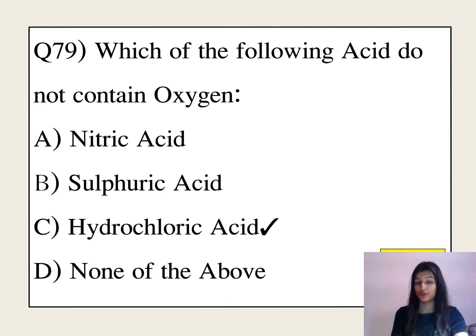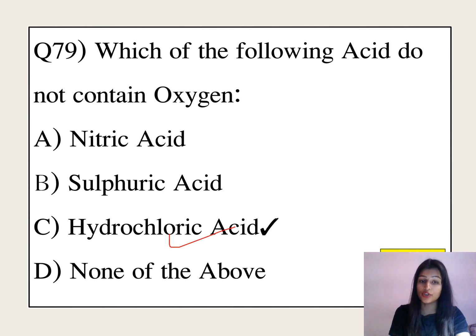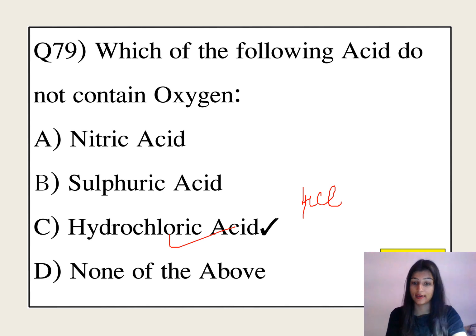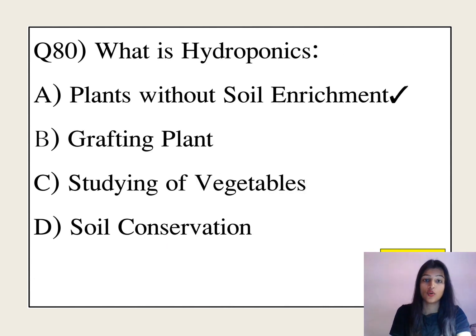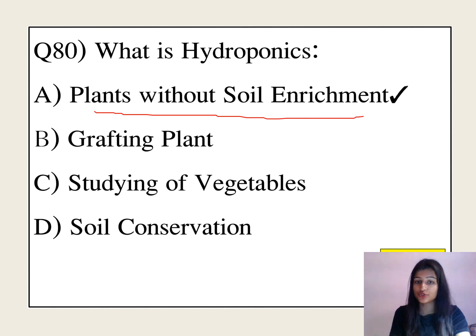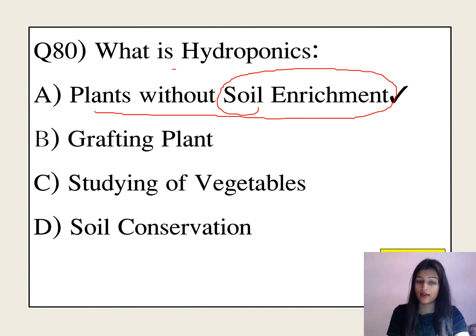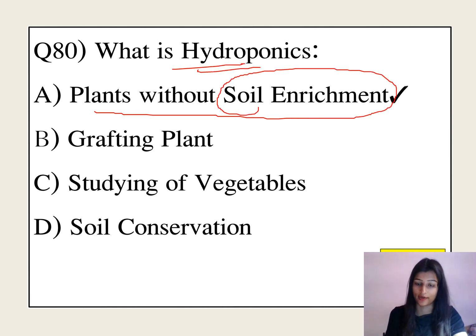Brass gets a fake color in air due to the presence of hydrogen sulfide. Which of the following acids does not contain oxygen? Hydrochloric acid does not contain oxygen. What is hydroponics? Plants grown without soil are known as hydroponics.